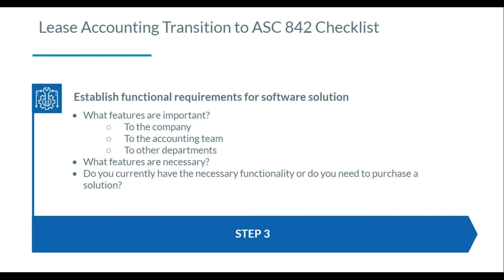Let's think about the other departments. Most organizations may have a real estate department, facilities, or operations — those people need to touch the leases as well. As accountants, we're typically the last to find out about a renewal taking place. We find ourselves doing retroactive modifications to true up a liability and asset that should have already taken place. Those gaps in communication come from siloed processes, so we'd recommend involving those other stakeholders and seeing what their needs are — more often than not, they're using an Excel spreadsheet just like the accounting team.